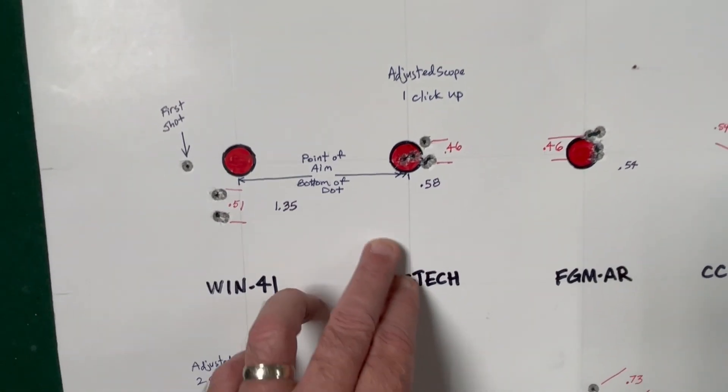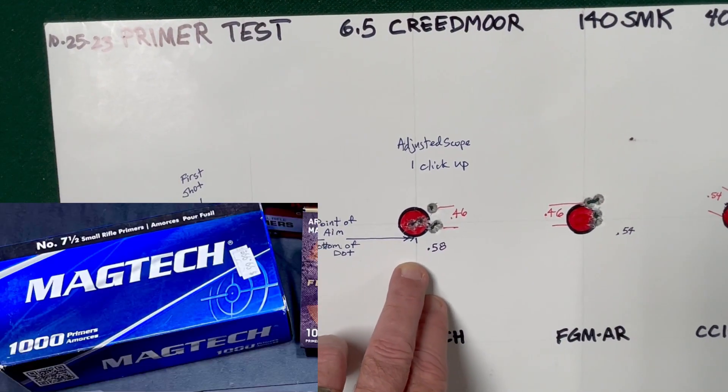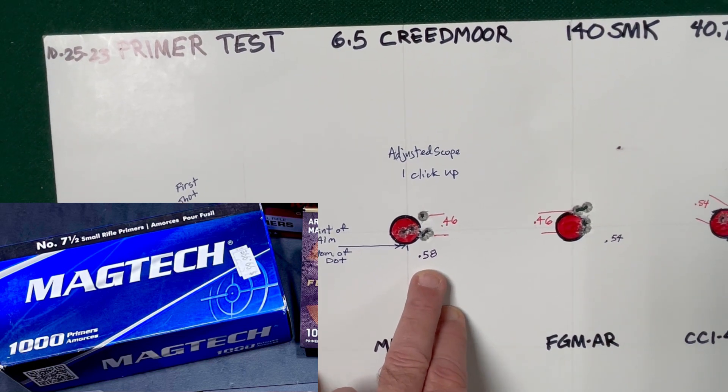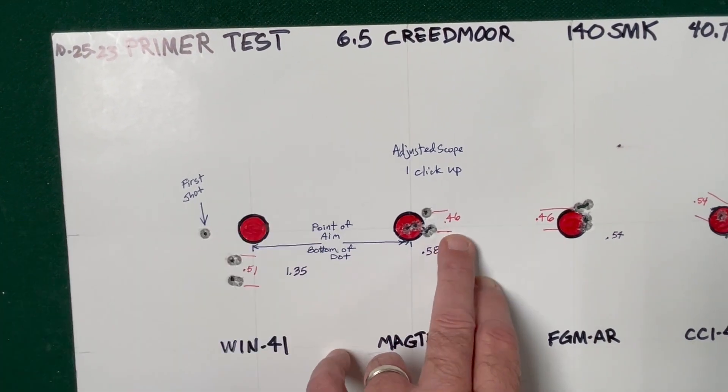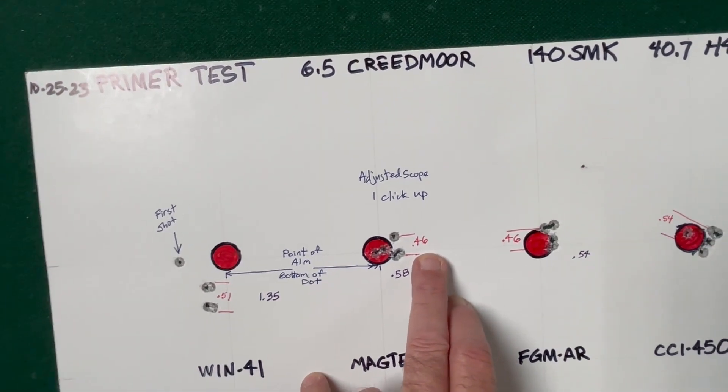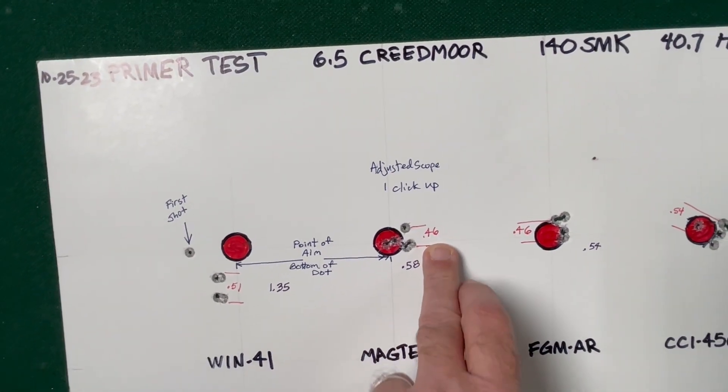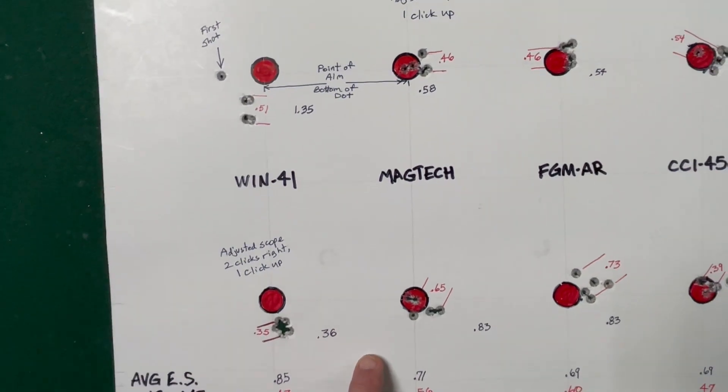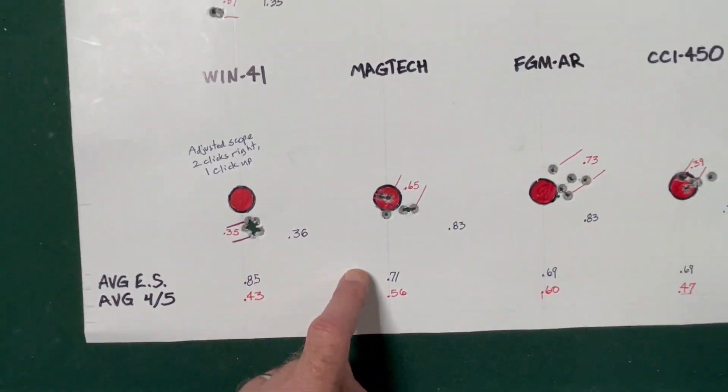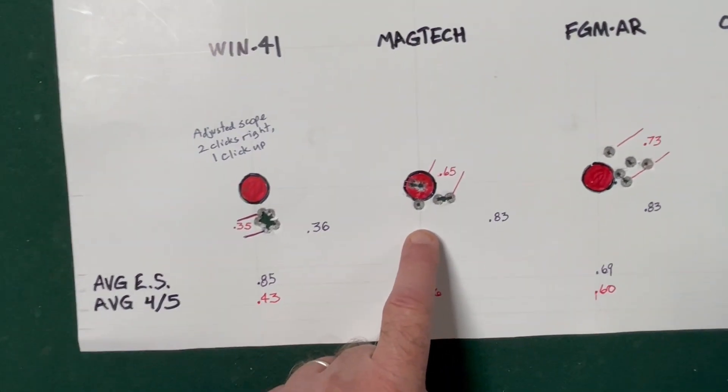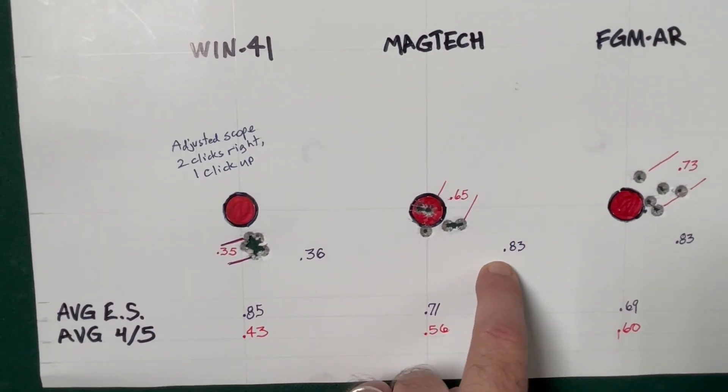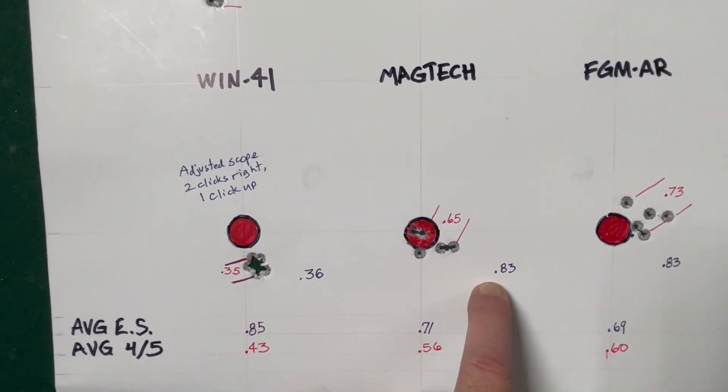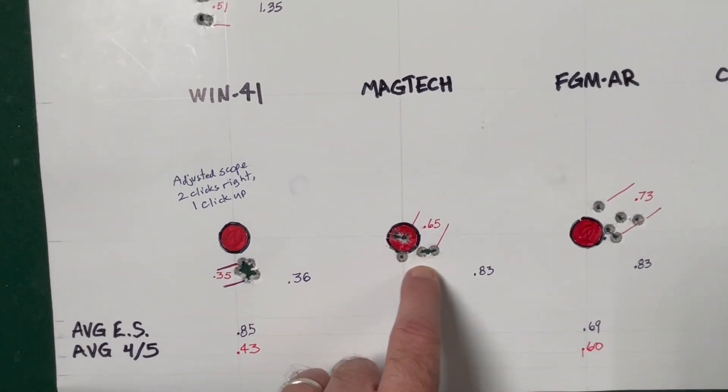After that, I adjusted the scope up one click. Then we moved on to Magtech Primers. We had an extreme spread of .58 inches and the best four out of five at .46. The gun's getting warmed up now and I think it's showing us what it's capable of. The second group of Magtech had a .83 extreme spread with the best four out of five at .65.